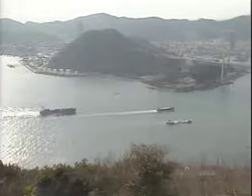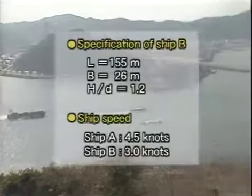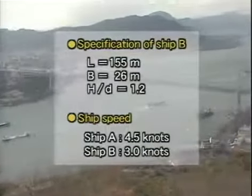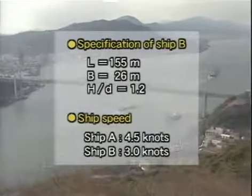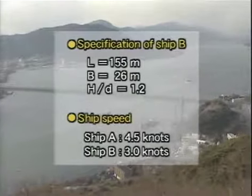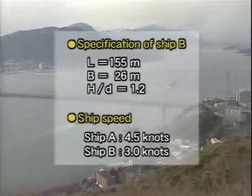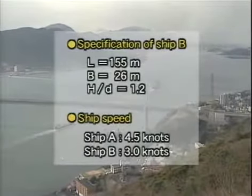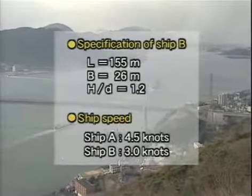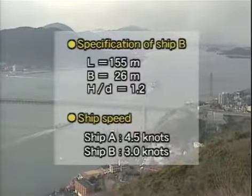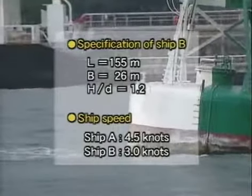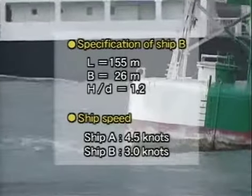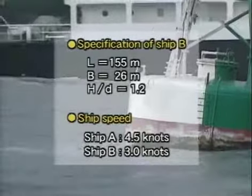The two ships are similar and these figures represent the specifications of ship B. Ship A runs at 4.5 knots and ship B runs at 3 knots. The beam distance between the two ships is half of the ship length, and the two ships are steered to maintain parallel courses.